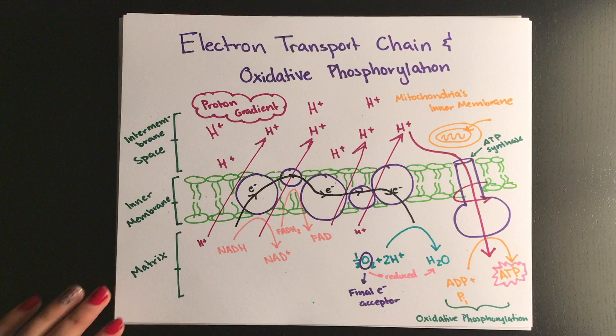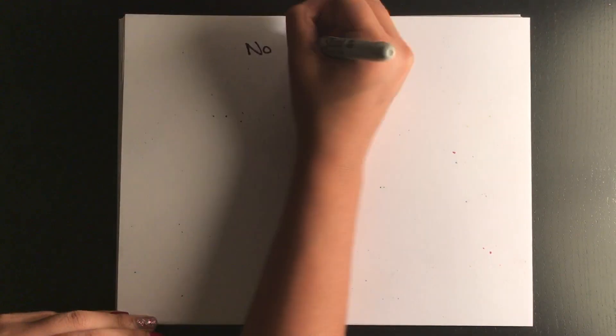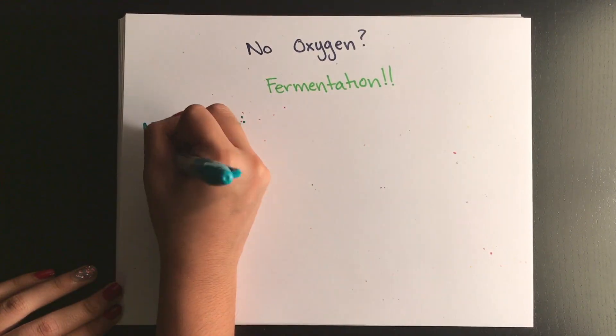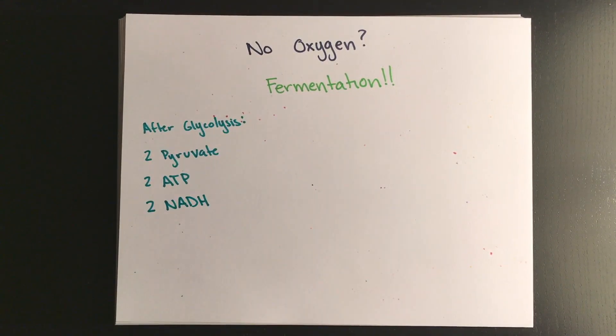While the numbers vary, in total, cellular respiration will produce about 36 molecules of ATP per glucose. If there is no oxygen, PDC, the Krebs cycle, and the ETC cannot occur, but we still need the electron carriers to be empty in order for the cycle to continue.